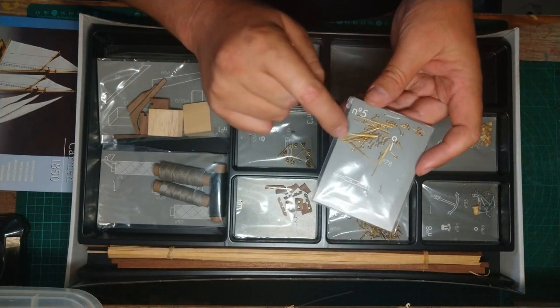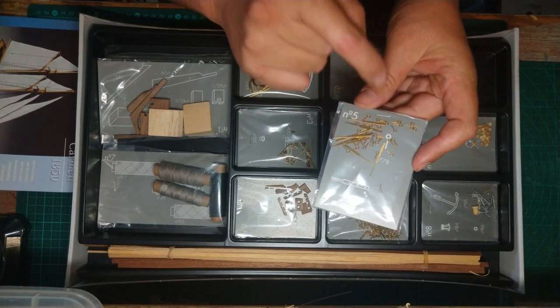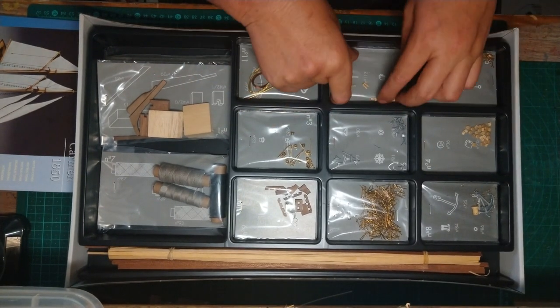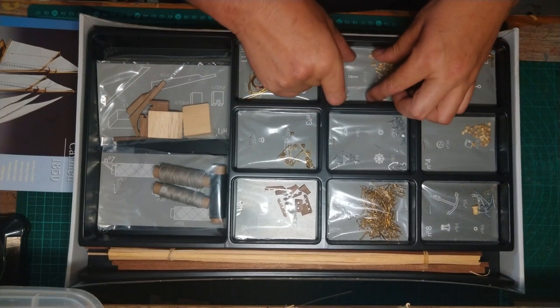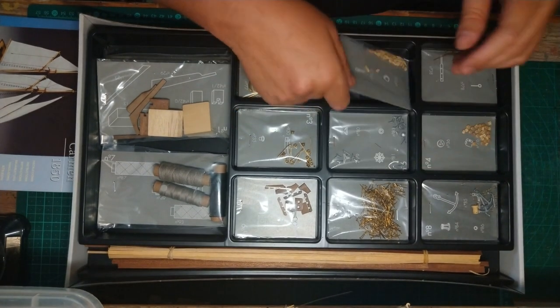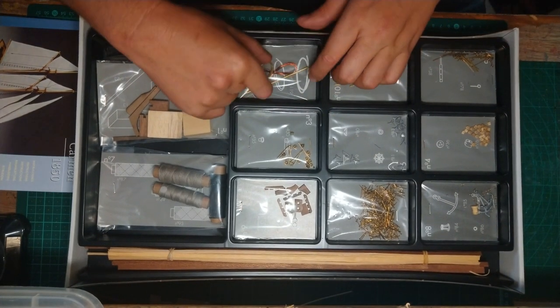Package number five, another couple of chrome bits. And then we've also got like eyepieces that are going to go into somewhere. Package number 10, another couple of wooden bits, small bits.